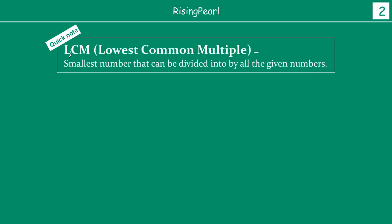Quick recap: LCM is a short form for lowest common multiple. That means the smallest number that can be divided into by all the given numbers.